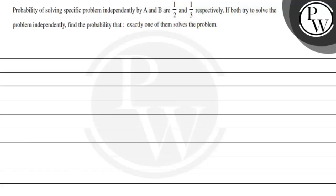Hello. Let's see the question. The question says: probability of solving a specific problem independently by A and B are 1/2 and 1/3 respectively. If both try to solve the problem independently, find the probability that exactly one of them solves the problem.